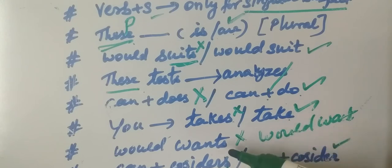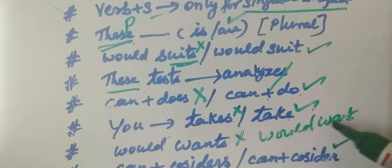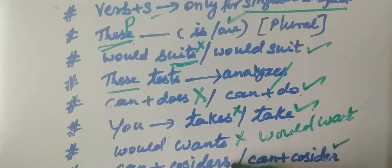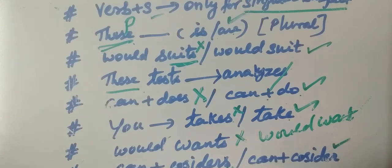'Would want' — that is the correct form. 'Would want', correct. Then 'can plus consider' — 'consider', not 'considers'. That is the structure.